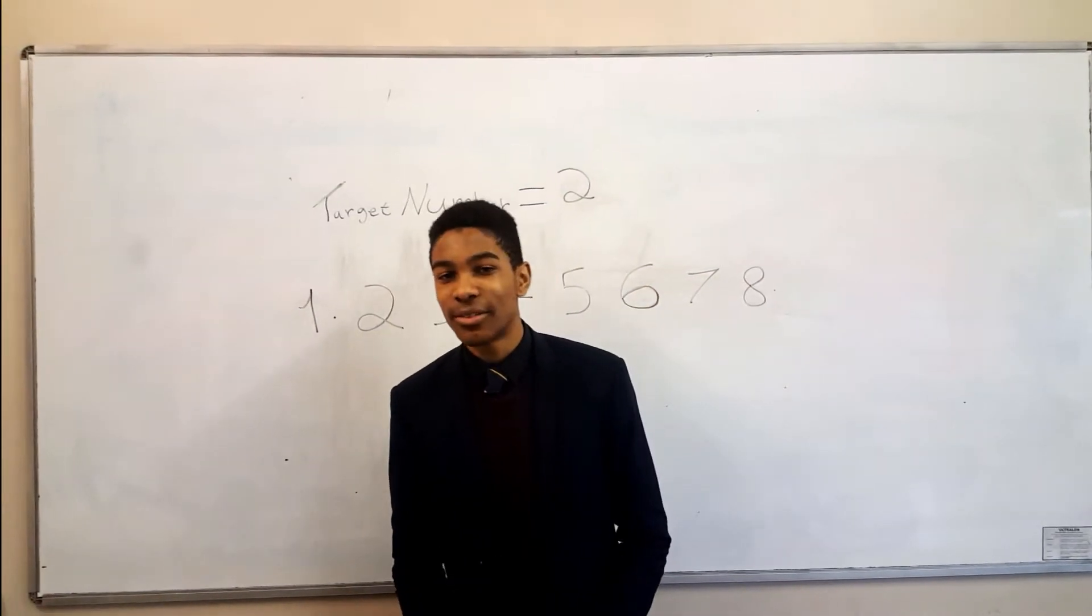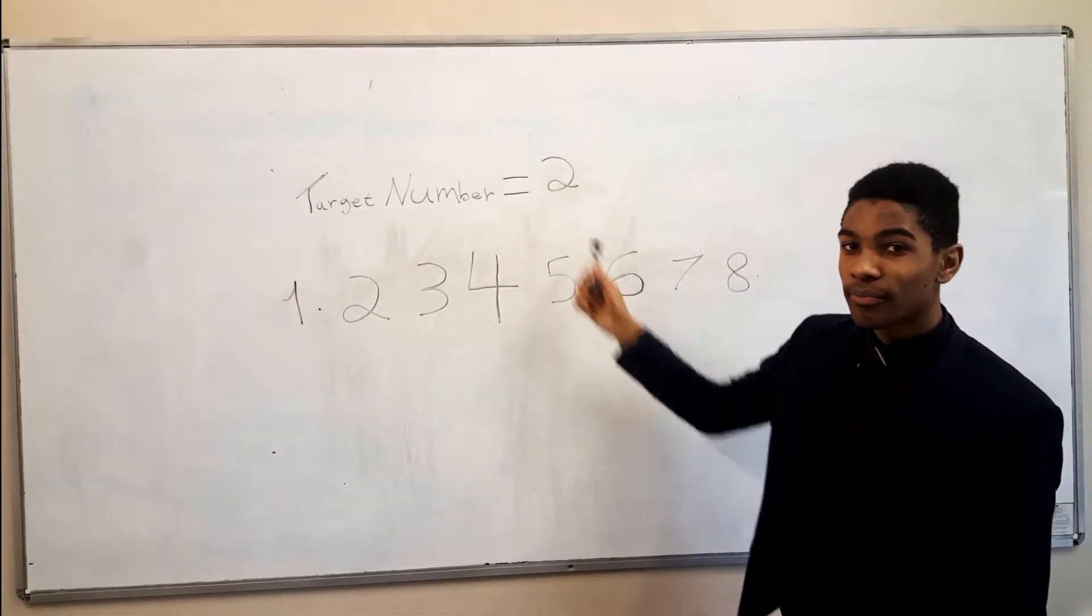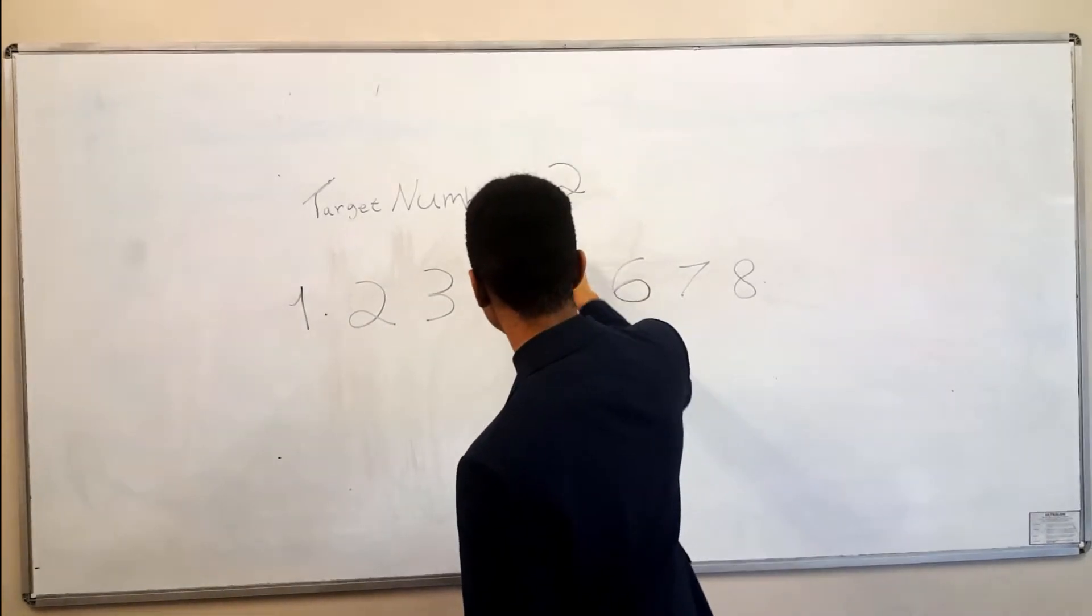Now the binary search algorithm. As you can see here, we have our list and we have our target number. The algorithm starts first by splitting the list in half.